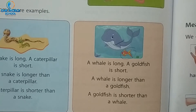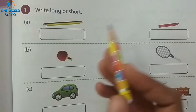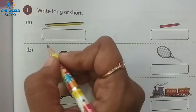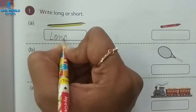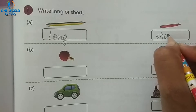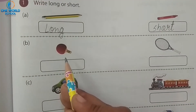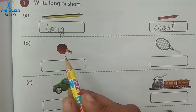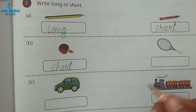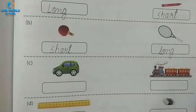Take the next page. Exercise 1: we have to write long or short. Number A — pencil. This pencil is long, so write L-O-N-G. This pencil is short, so write S-H-O-R-T. And this one is long, so write L-O-N-G.